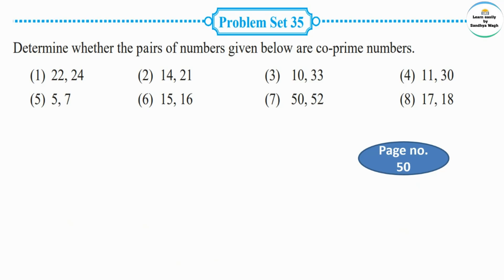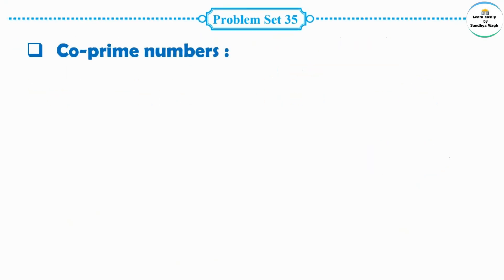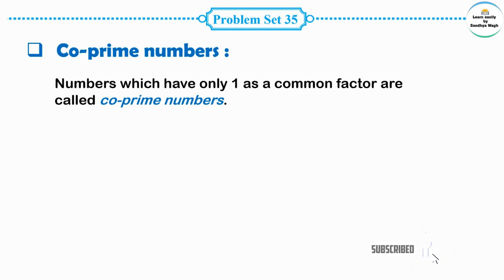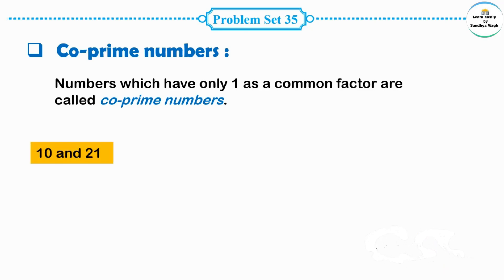We need to determine whether the pairs of numbers given below are co-prime numbers. First, let us understand what co-prime numbers are. Co-prime numbers are numbers which have only one as a common factor. Such numbers are called co-prime numbers.